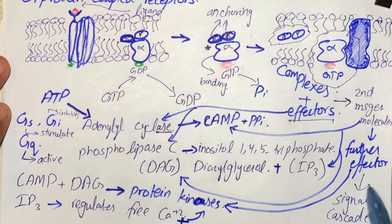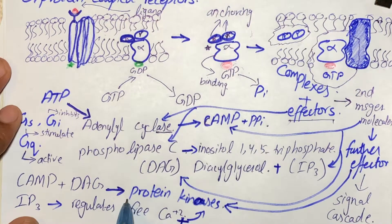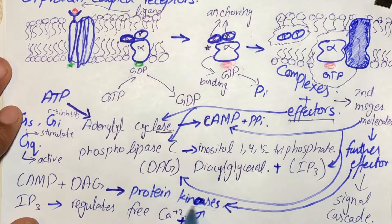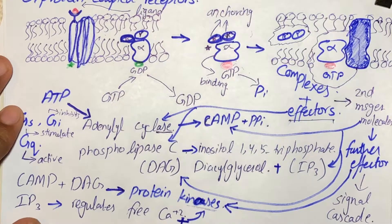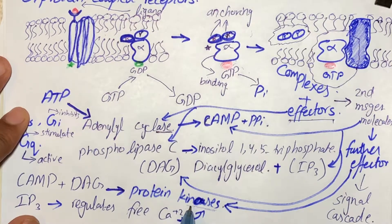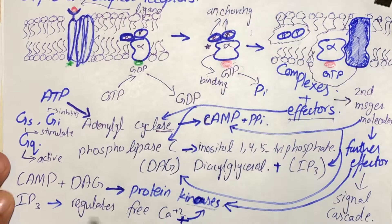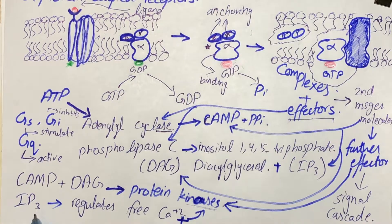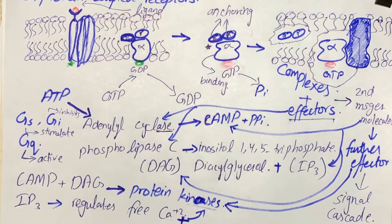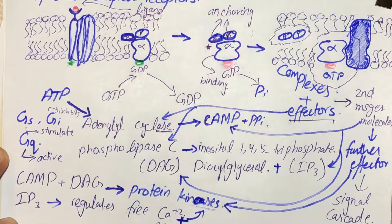Further effectors in this cascade include protein kinases, which are also enzymes — though effectors can be proteins or ion channels as well. The activation of protein kinases causes further reactions within the cell. IP3 is also responsible for regulating intracellular free calcium concentration. That covers all about G protein-coupled receptors — if you have any questions, let me know in the comment section below, and thank you for watching.